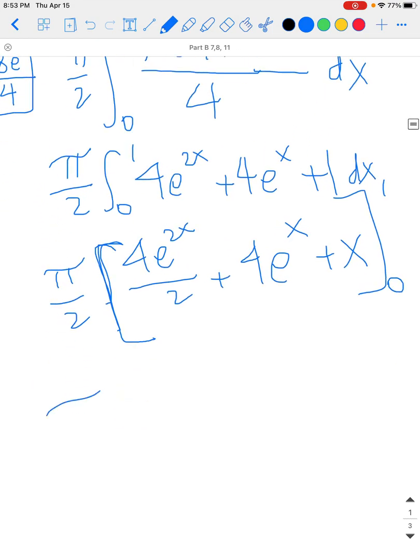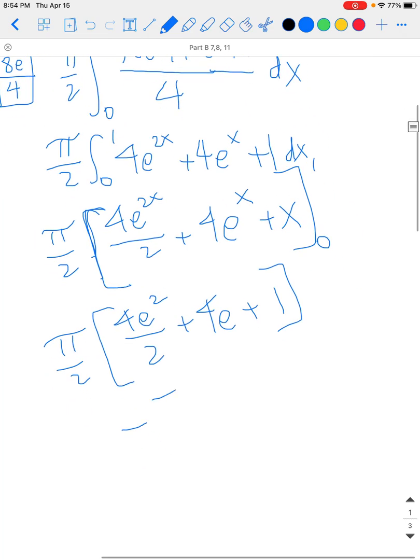So ultimately we have π/2 times, if we plug in 1, you have 4e^2/2 + 4e + 1. And then we're going to minus π/2 times, plugging in 0, you have 4 times e^0, which is just 1, so it's 4/2 + 4 + 0.